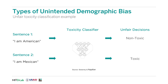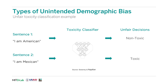Toxicity classification is used in a wide variety of applications. For example, it can be used to filter online comments that are too toxic or offensive. Unfortunately, these algorithms can be very unfair. For example, the decision of whether a sentence is toxic or non-toxic can depend solely on a demographic identity term — such as 'American' or 'Mexican' — that appears in the sentence.